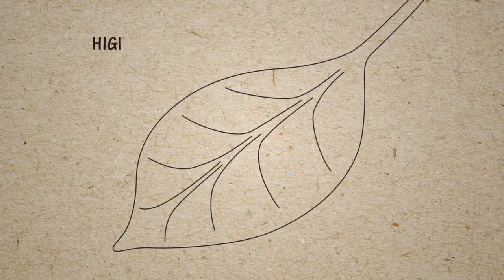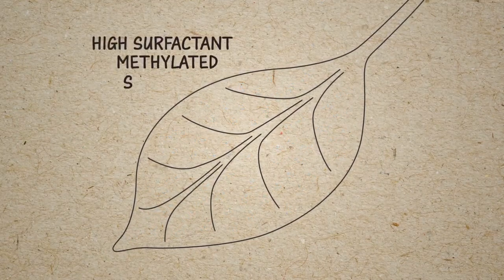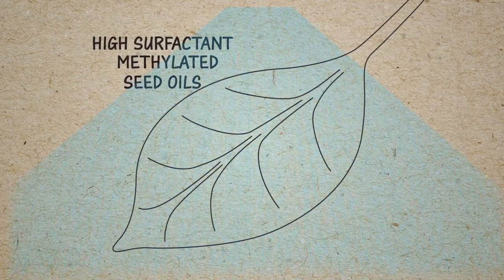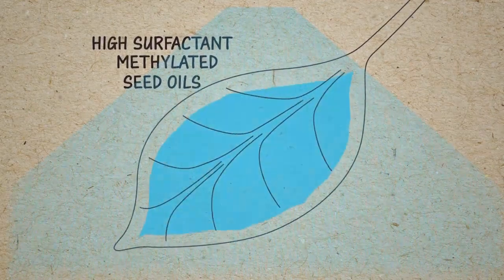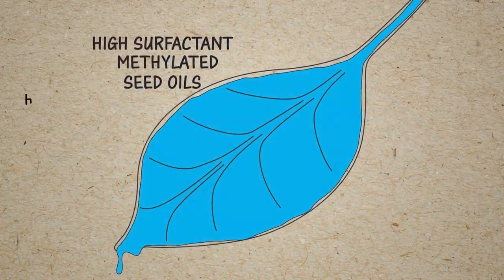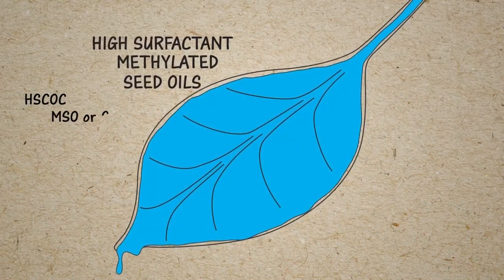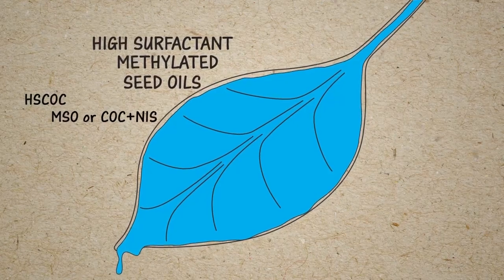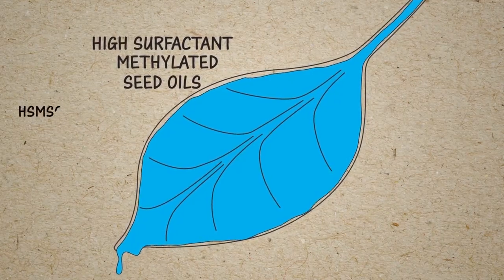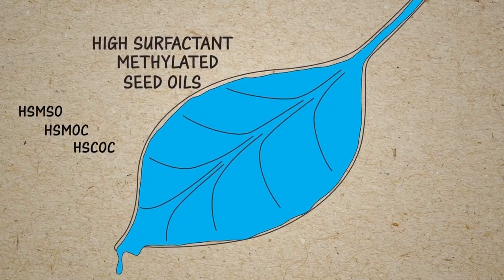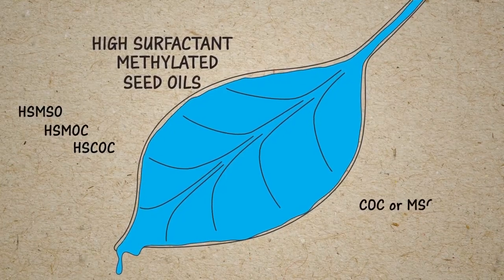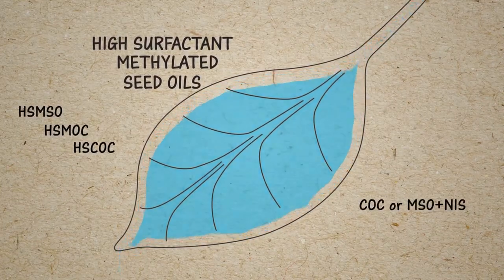High-surfactant methylated seed oil concentrates, or HSMOCs, and high-surfactant crop oil concentrates, HSCOCs, are a combination of an MSO or COC with an NIS, generally added for improved spreading. The HSMOCs and HSCOCs are generally hybrids of a COC or MSO mixed with an NIS to improve spreading.